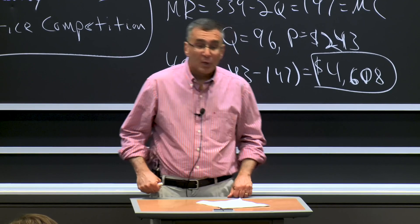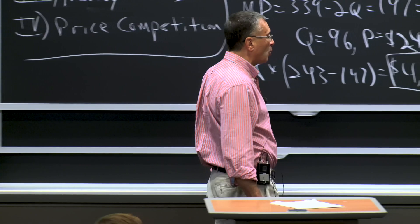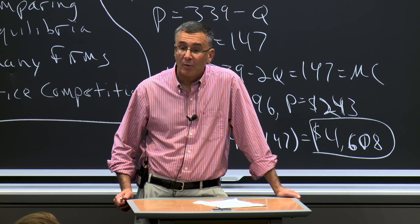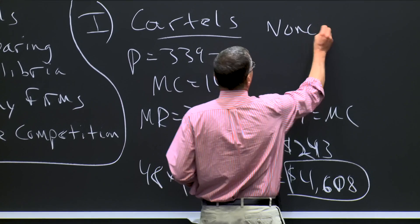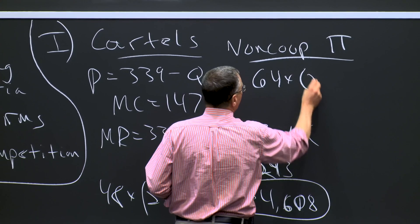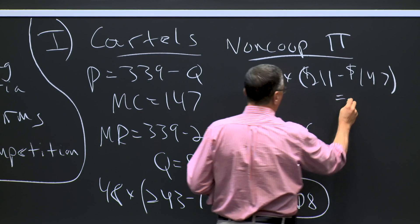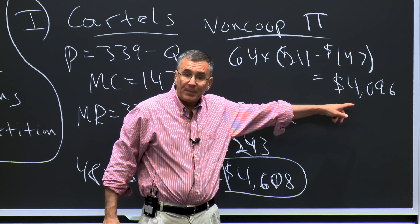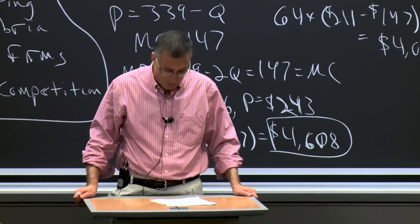What we can see is that these profits are much higher than what they got in the non-cooperative equilibrium. Remember, in the non-cooperative equilibrium, they were each doing 64 flights at a price of $211. Their non-cooperative profits were 64 times ($211 minus $147), or $4,096. So their profits have gone up by 12.5% to $4,608 by cooperating.